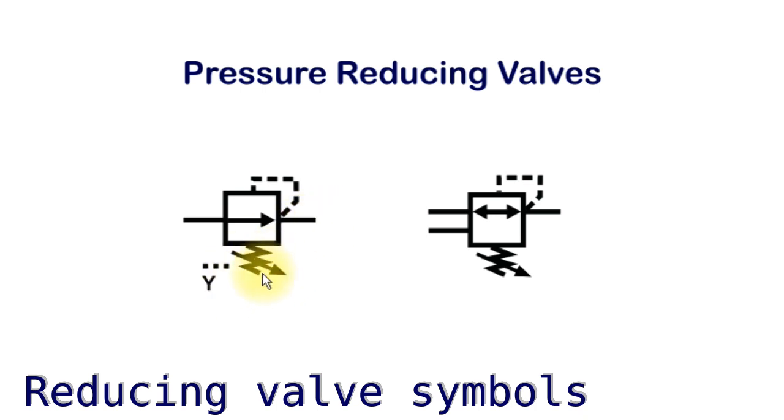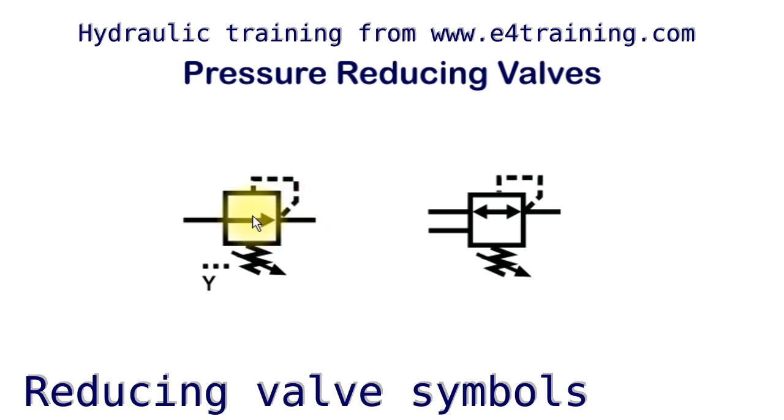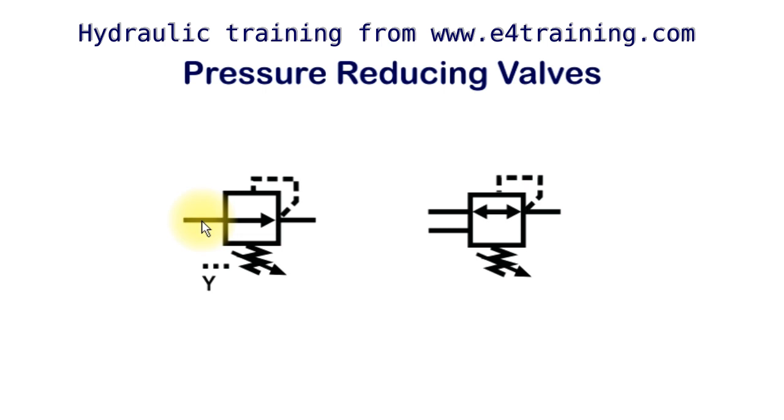What we're trying to achieve with this valve is a constant pressure on the output as set by this spring. You can tell the difference between a reducing valve and a relief valve by: on the reducing valve, this line comes from the output where the arrow is pointing. On a relief valve, it would come from the input side and limit the pressure, and the valve is drawn in mid position rather than a relief valve that's drawn here.